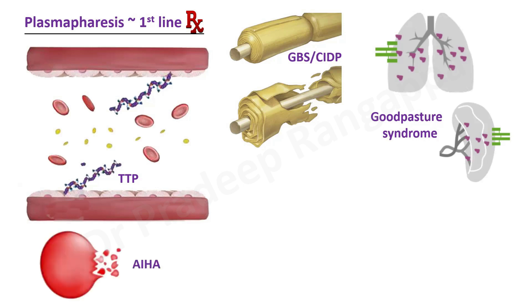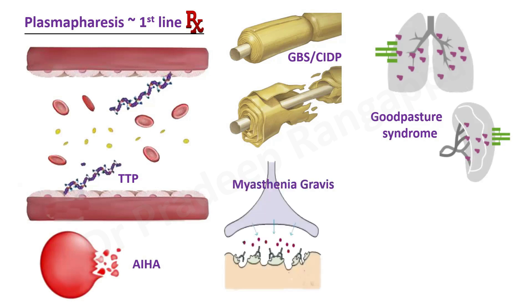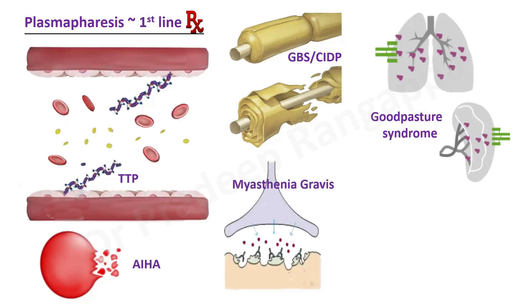Autoimmune hemolytic anemia, where hemolysis occurs, is also a condition where plasma apheresis can be used as first-line. Myasthenia gravis — where antibodies target ACh receptors — is also a first-line indication for plasma apheresis. These are some of the conditions where plasma apheresis is considered first-line, illustrated pictorially for trainees to remember.